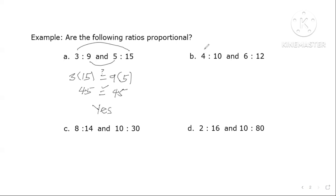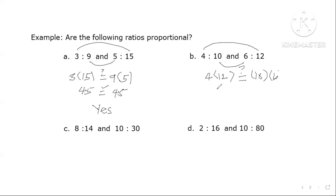Now let's go to letter b. Let's see whether the product of 4 and 12 is equal to the product of 10 and 6. So 4 times 12 is 48, and 10 times 6 is 60. They are not equal, so the answer is no.